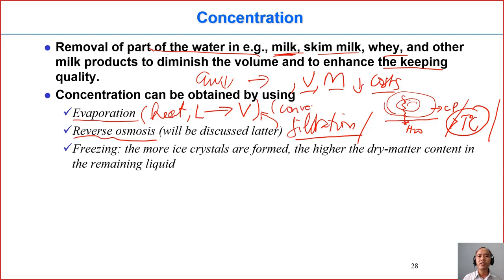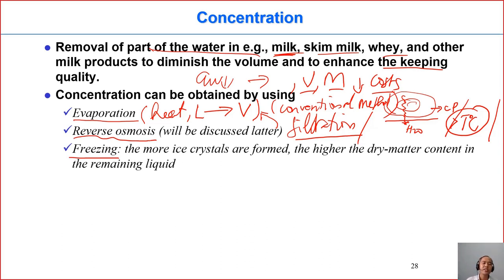Evaporation is the conventional method. There is another advanced method which can be applied for concentration — it's freezing. It's a special instrument that freezes only the water. The water becomes ice crystals and is then separated away, and the remaining dry matter content becomes higher.